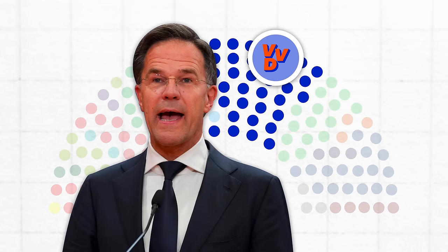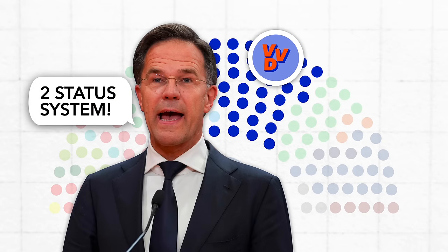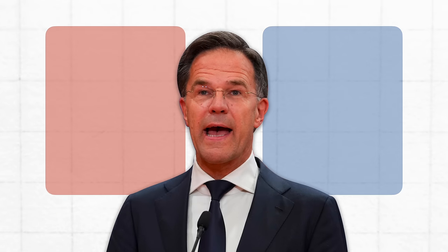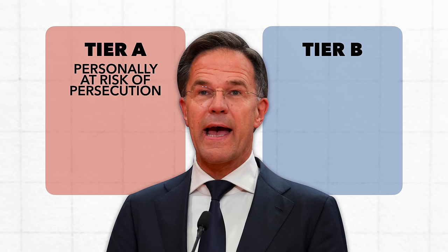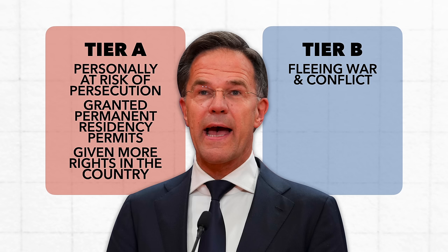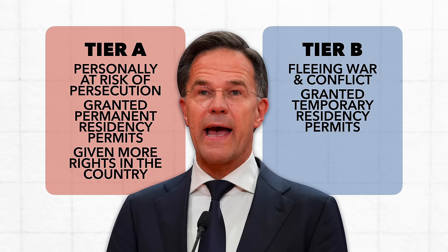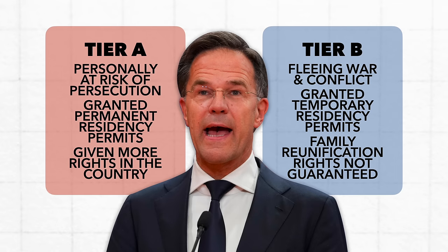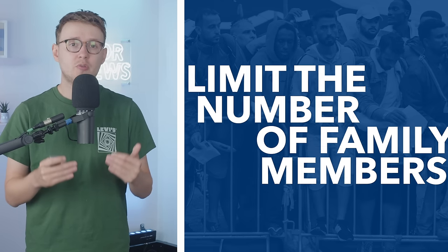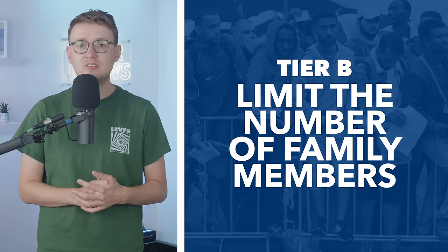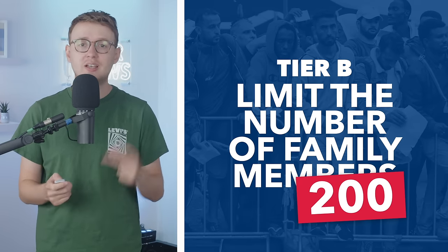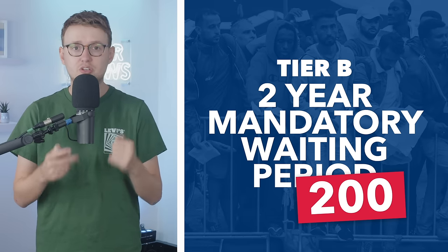Rutte and his VVD were pushing to introduce something called a two-status system, which would effectively divide asylum seekers into two tiers — A or B. A-status refugees would be those personally at risk of persecution, maybe for things like their political views or sexuality, while those of B-status would be people fleeing from war or conflict. The former would be granted permanent residency permits and enjoy more rights, while the latter would only get temporary permits and less rights to things like family reunion. Specifically, the VVD wanted to cap the number of family members, such as children, who could join B-status war refugees in the Netherlands at 200 per month, as well as introducing a two-year mandatory wait period before those relatives could enter the country.